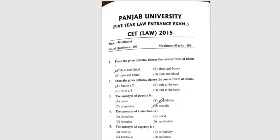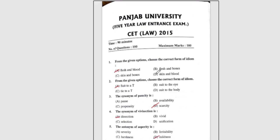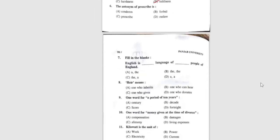Question 4: The synonym of vivisection is — the correct answer is A, dissection. Question 5: The antonym of asperity is — the correct answer is option D, mindless. Question 6: The antonym of proscribe is — the correct answer is option C, prescribe.